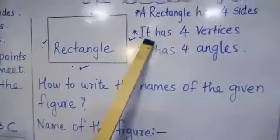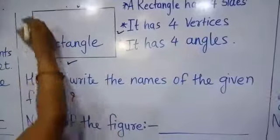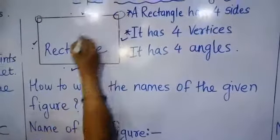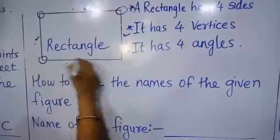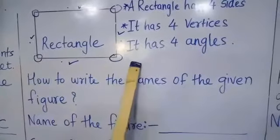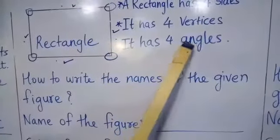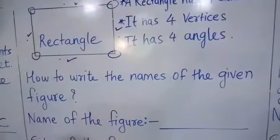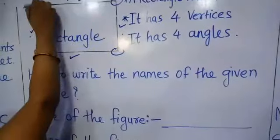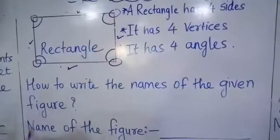A rectangle also has four vertices — one, two, three, and four. And the next property is it has four angles — one, two, three, and four.